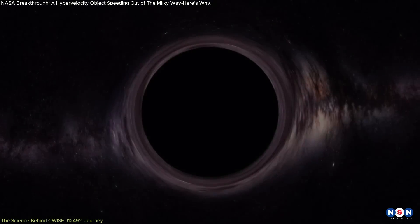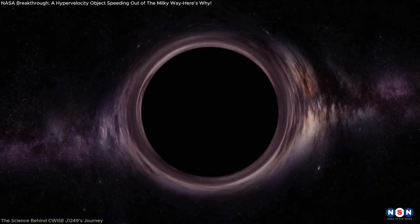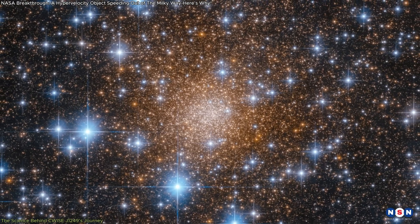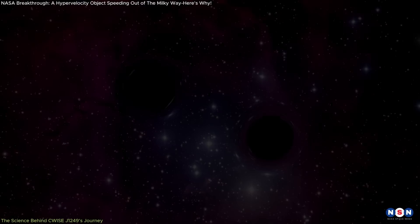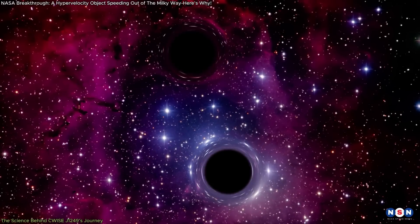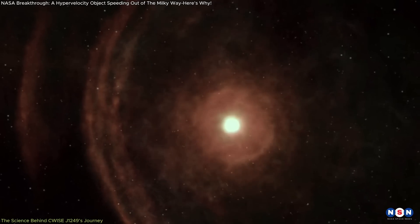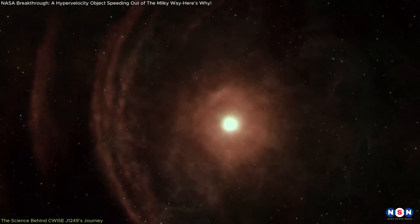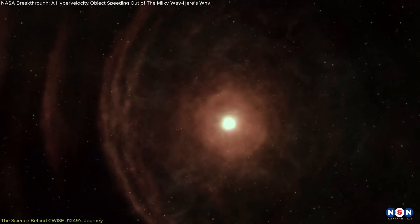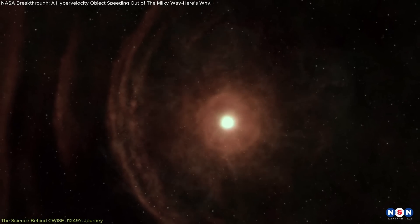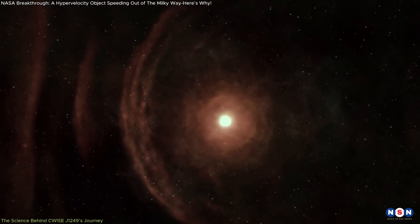Another potential explanation involves interactions with black holes. If this object originated in a globular cluster, it could have been ejected due to the gravitational interactions within a system of black holes. Such interactions are rare, but have been simulated and shown to be capable of imparting the necessary velocity to propel a star out of the cluster and eventually out of the galaxy.